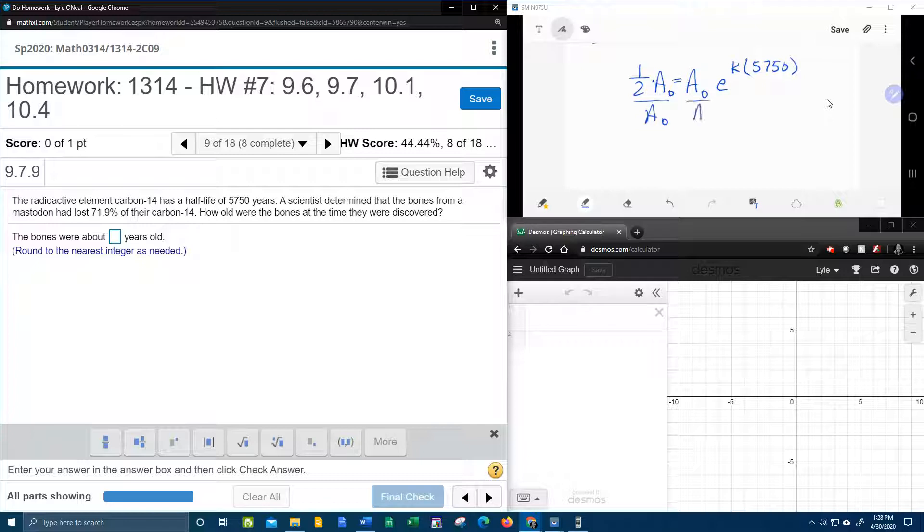Dividing both sides by A-naught. The A-naughts will cancel. And that's going to leave me one-half equals E to the... Now this is multiplication, K times 5,750. And so I'm going to rewrite it like that just because I feel like it. 5,750K. That still means K times 5,750. Alright, so at this point, we now have an exponential equation we can solve by converting to a logarithm. We're going to bring the base down. That's going to give us log base E. And we're going to switch the other two around. So the 5,750K comes here. And the one-half goes here.